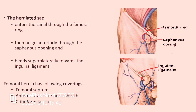The coverings of the femoral hernia sac are three structures that the intestinal loops push through before entering the femoral ring: first, the femoral septum (extraperitoneal tissue); second, the anterior wall of the femoral sheath; and third, the cribriform fascia which covers the saphenous opening. So the three coverings are the femoral septum, the anterior wall of the femoral sheath, and the cribriform fascia.